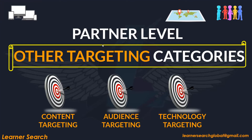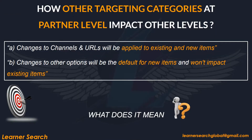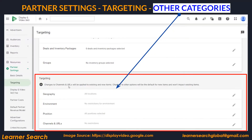Let's look at the other targeting categories at the same Partner Level, such as Content Targeting, Audience Targeting, and Technology Targeting. Partner Level settings for these categories show options including Geo, Environment, Position, and Channels and URLs. Geo falls under Audience Targeting, whereas Environment, Position, and Channels and URLs fall under the Content category. Since Partner Level has only Content and Audience, we will look at how these targeting options impact lower levels of the DV360 hierarchy. The note here mentions two points.